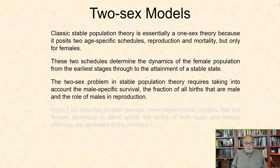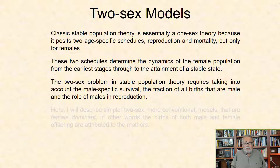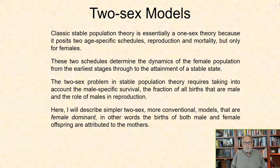The two-sex problem in stable population theory requires taking into account the male-specific survival, the fraction of all births that are male, and the role of males in reproduction. Here I will describe simpler two-sex, more conventional models that are female-dominant — in other words, the births of both males and female offspring are attributed to the mothers.